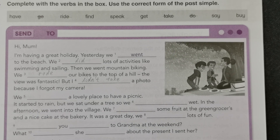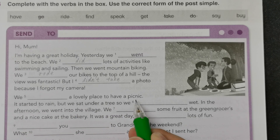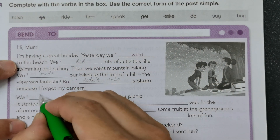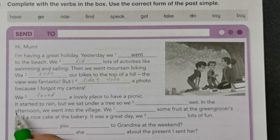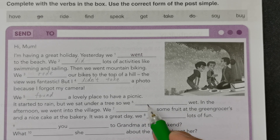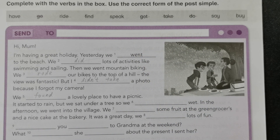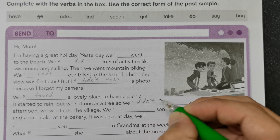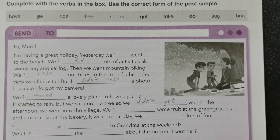And then further: 'we find a lovely place to have a picnic.' So this is an irregular verb, we will change its form to 'found', F-O-U-N-D. So we found a lovely place to have a picnic. It started to rain but we sat under a tree. So 'we wet' — basically it's 'didn't get wet'. It's 'get' in negative form, so auxiliary verb plus negative form: 'didn't get'. So didn't get wet.